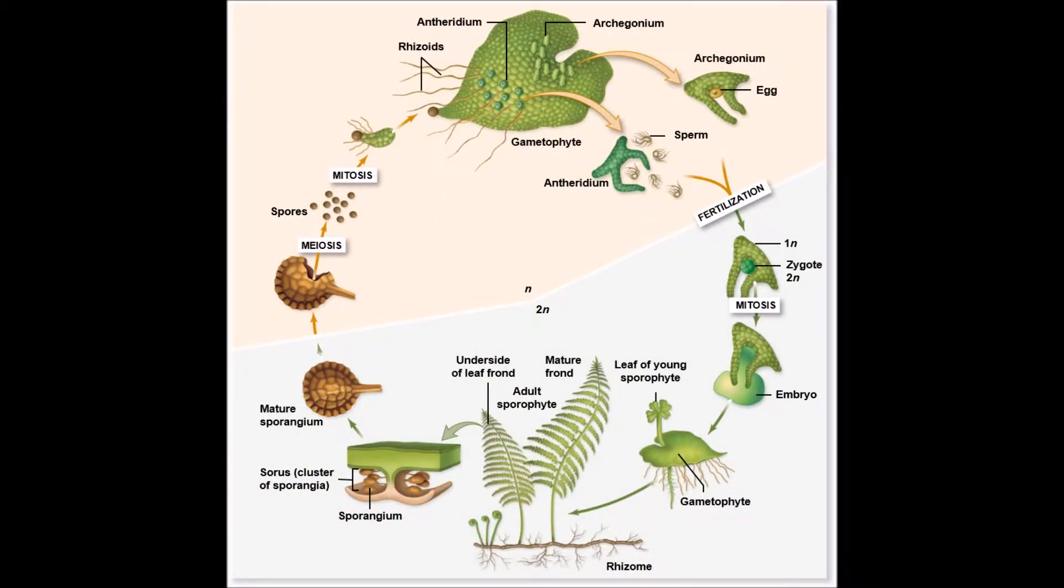Unlike in animals, plants go through a two-stage haplodiplontic reproduction system which alternates generations from a haploid stage to a diploid stage.